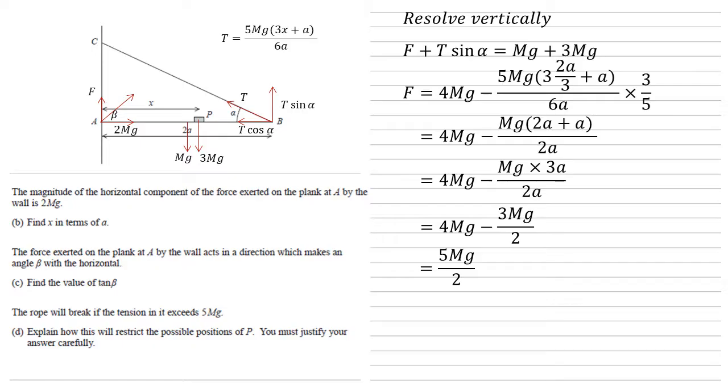We now know the vertical component of our force, 5Mg over 2. We've got our horizontal component, 2Mg, so using trigonometry, we've got that tan beta equals the opposite, the vertical of 5Mg over 2, over the adjacent, which is the horizontal section, 2Mg, which is equal to 5 over 4.